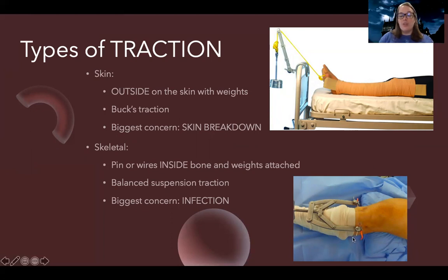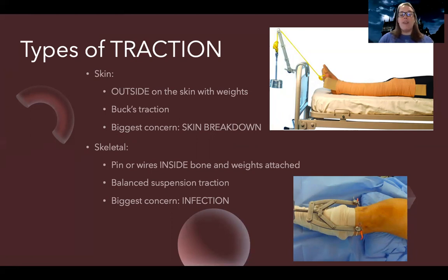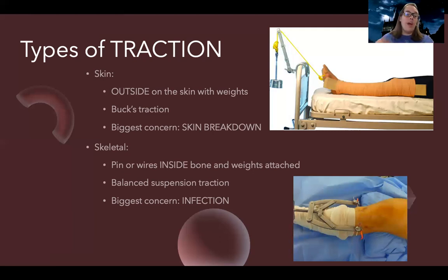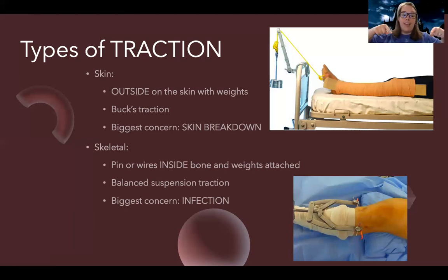There's also what's called skeletal traction. This is where there's actually pins or wires inside the bone — kind of like that external fixator we were just looking at. You can have skeletal traction attached to that. Effectively, there are pins or wires attached to a device that will have weights attached, but the difference is there's actually a pin or wire in the bone with the weights attached. That's called balanced suspension traction. Our biggest concern for that one is going to be infection, because anytime we create a hole or an opening where bacteria can get from the outside inside your body, there's always going to be a higher risk of infection.